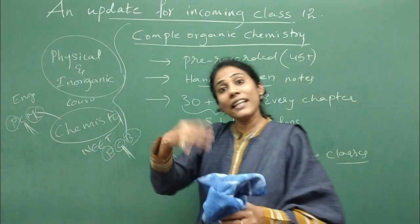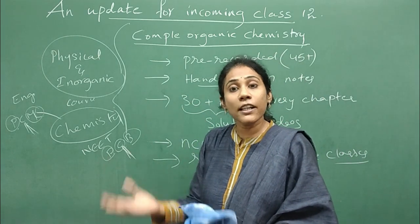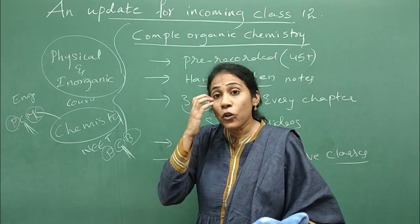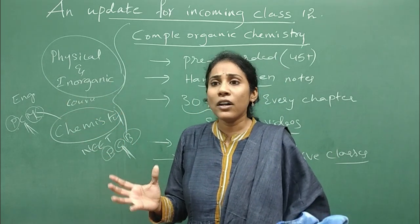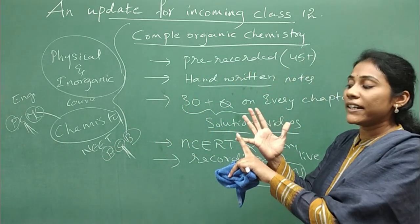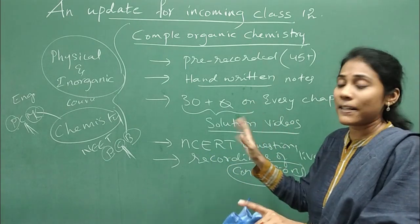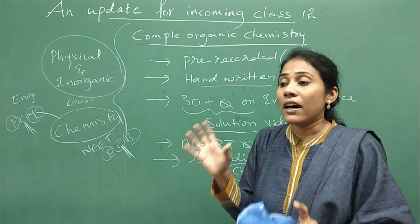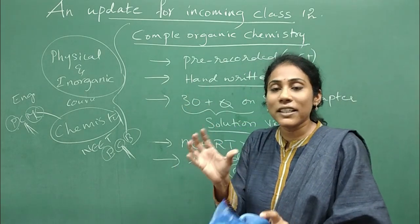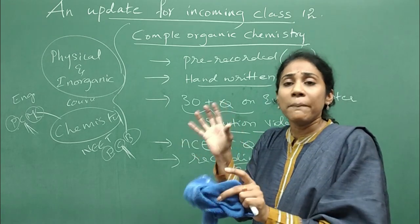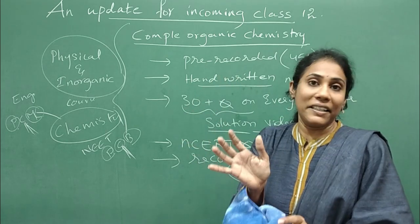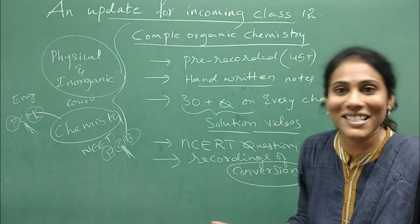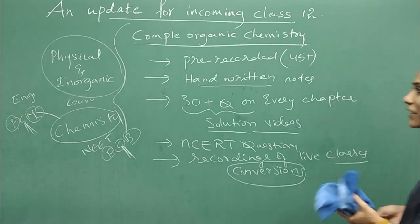For engineering entrance exams like JEE and KCET, you have to concentrate on physics, chemistry, and maths. Both maths and physics are numerical-based, whereas chemistry again acts as a bridge to improve your score. If you concentrate more on chemistry, your overall score can increase. For chemistry, you don't need big reference books or tuitions. Your weapons are your NCERT textbooks for class 11 and 12, and a good content provider — a teacher or guide — to give concept clarity and a little push of focus.